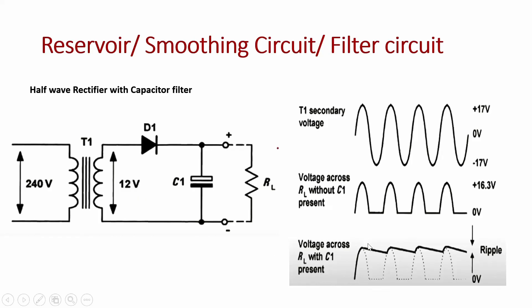The capacitor charges from a threshold point to the maximum during the positive half cycle. During the negative half cycle, the circuit is open, current is zero, and the capacitor discharges from the peak toward the next maximum. When the next positive half cycle arrives, current flows again and the capacitor charges back to the peak. This charging and discharging cycle repeats — charging time is always less than discharging time. The result is a ripple voltage present in the output across the capacitor.